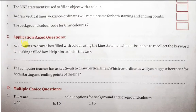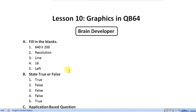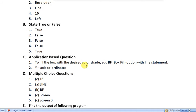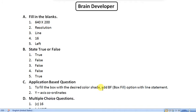Application based question: Kabir wants to draw a box filled with color using line statement, but he is unable to recollect the keyword. Which keyword is used with line statement to fill a box? He needs to use B or F letter. To fill the box with the desired color, set add BF means box fill option with line statement.